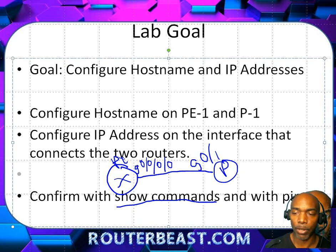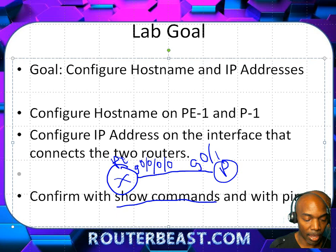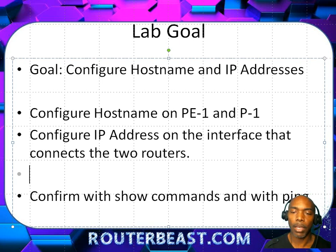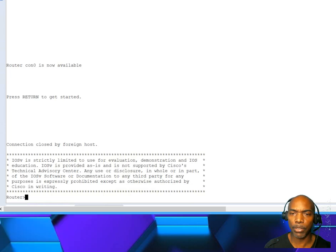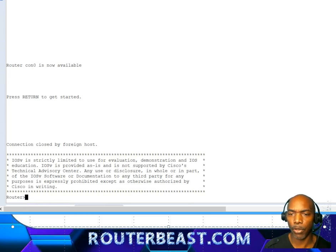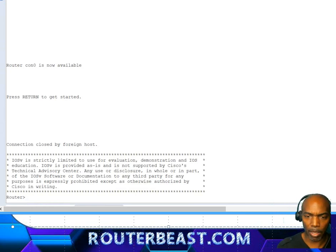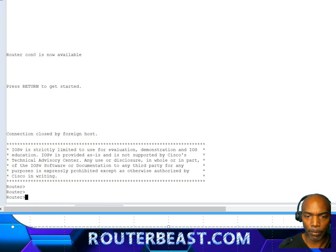We'll be doing some show commands — show ip interface brief — as well as ping as we go forward. By the way, instead of using GNS3 in this particular instance, we're going to be using Virl. So over here in Virl, the first thing we'll be looking at is this IOS router.